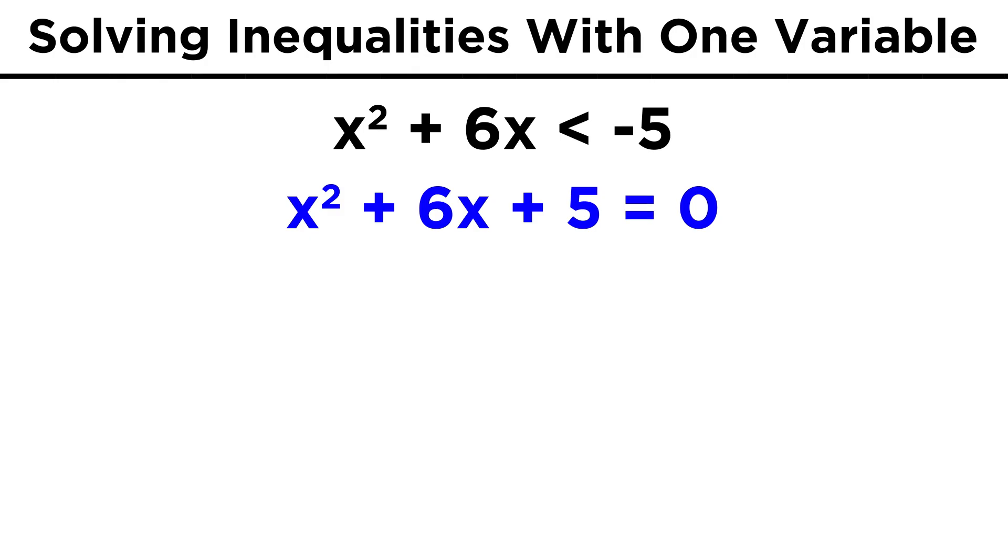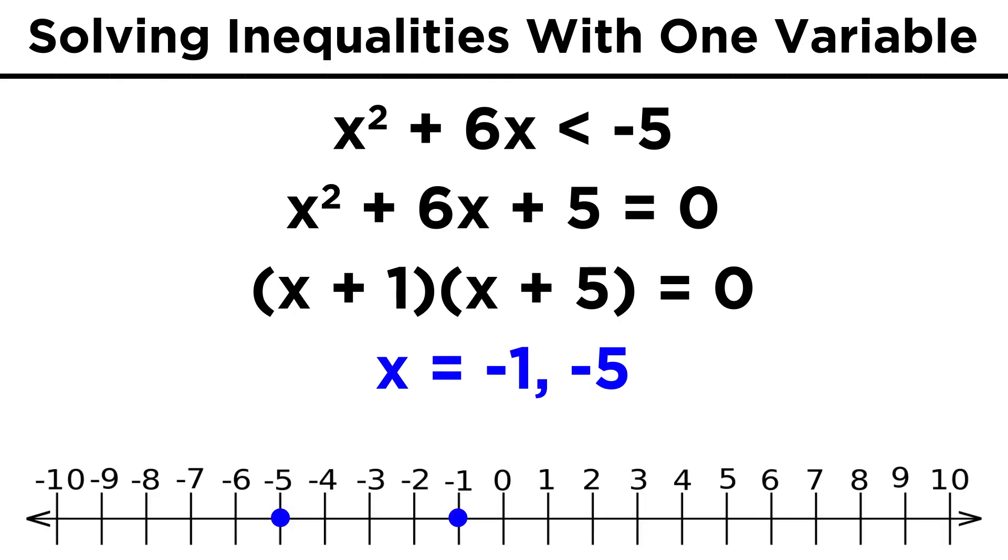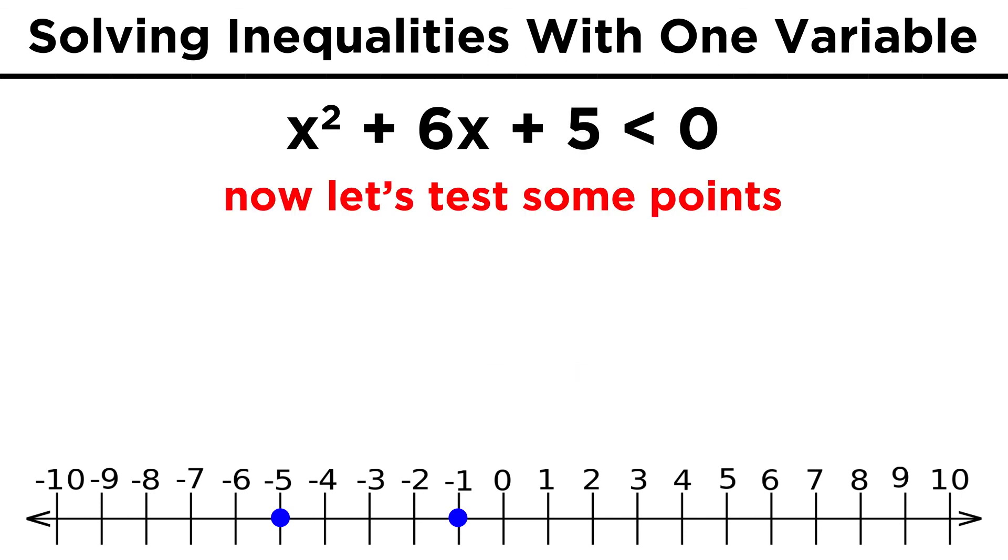Then we pretend that the less than sign is an equals sign, and we solve the equation. In this case, that would require factoring this to get X plus one times X plus five, which gives us negative one and negative five as the solutions. Then we can draw a number line and mark these points. Then to see which sections of the number line satisfy the inequality, we just pick a point from each section and see if it works.